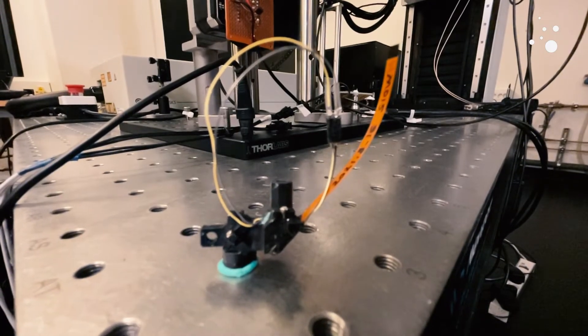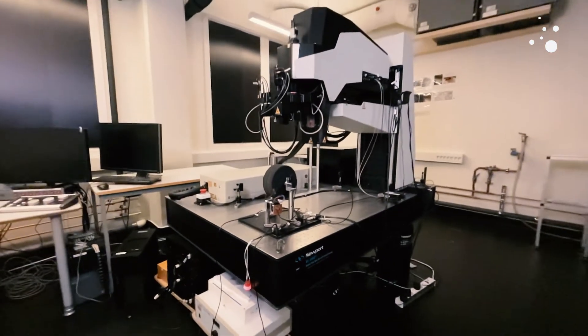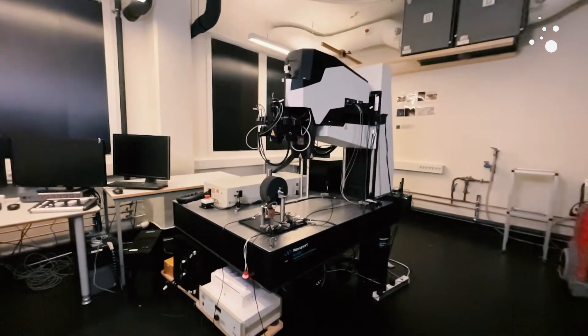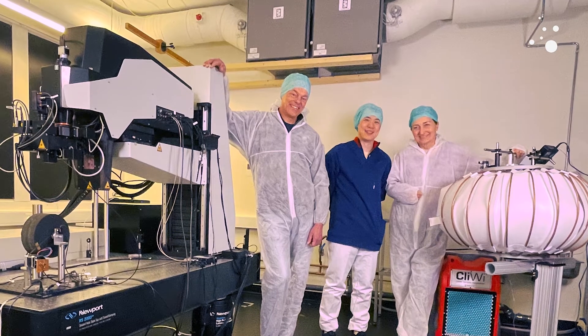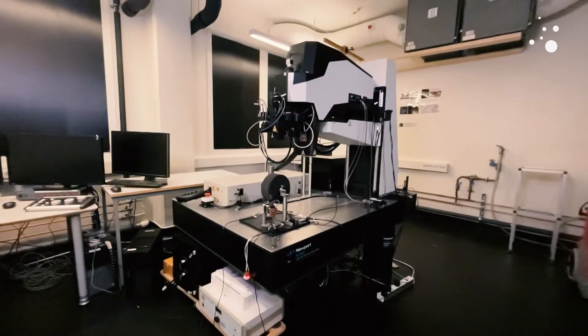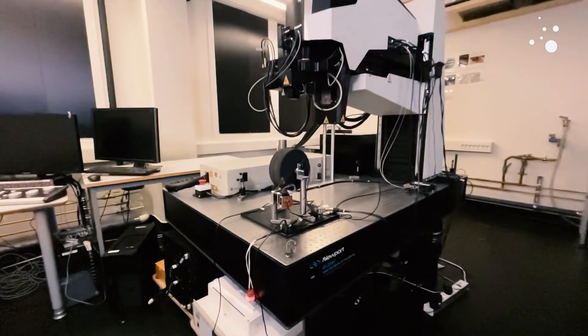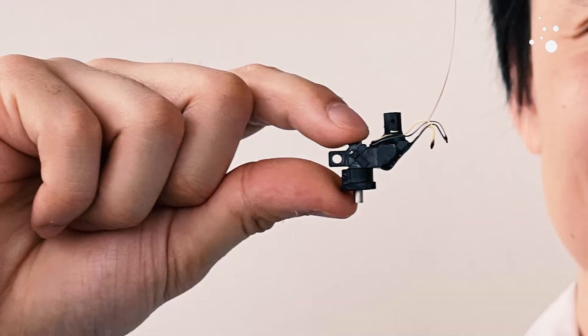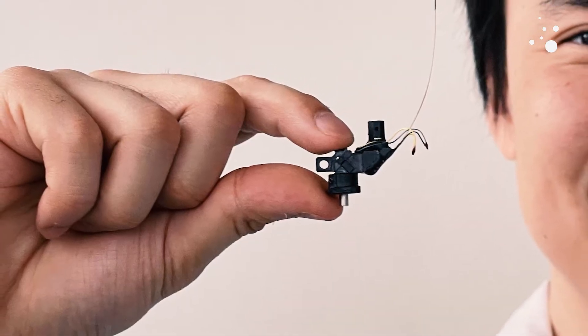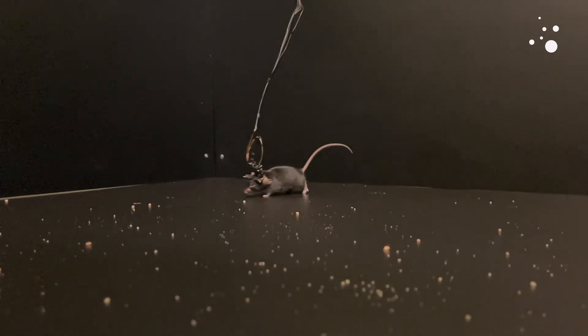So let's pit Mini2P against the closest existing technologies. This is a benchtop 2-photon microscope. It weighs half a ton and takes up nearly the whole room. The benchtop microscope restricts the mouse's natural movement that's nothing like a mouse would normally experience, which means its behavior probably isn't natural either. Mini2P, on the other hand, weighs 2.4 grams and allows the mouse to move just as freely and dynamically as it would without carrying a Mini2P on its head.